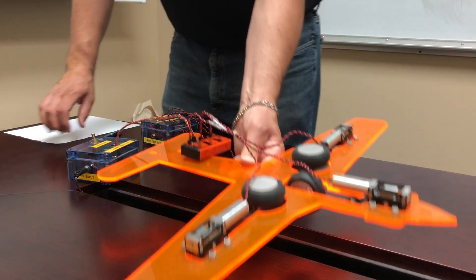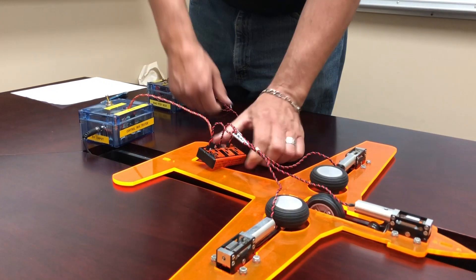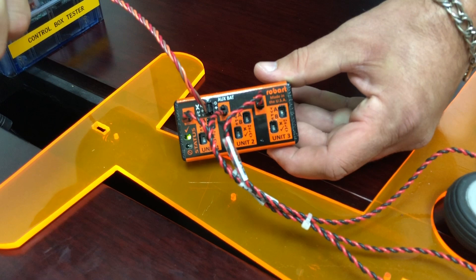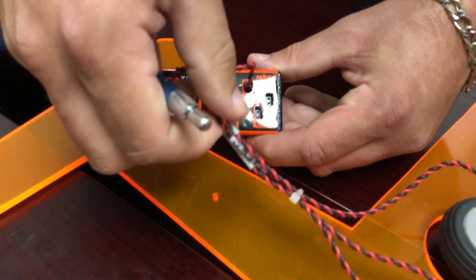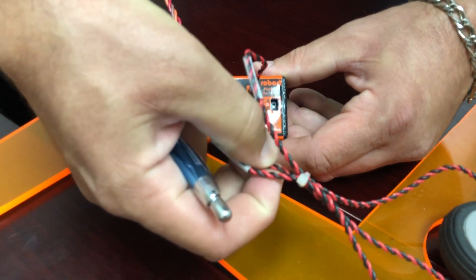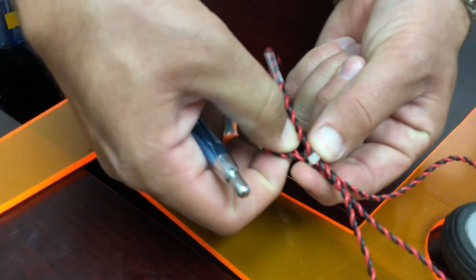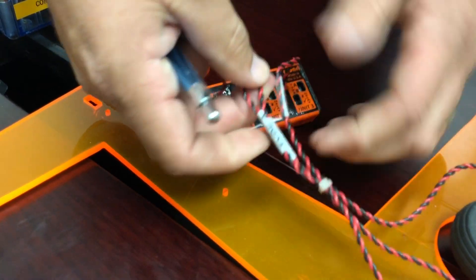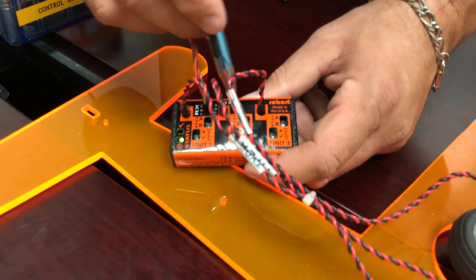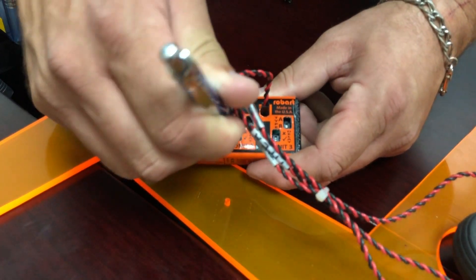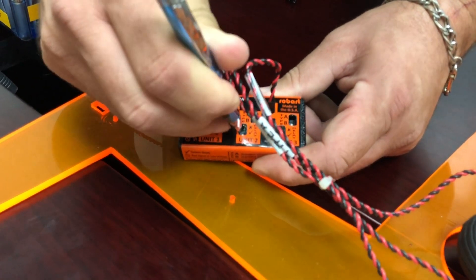The last thing I want to show you on here is on your control box you do have a delay switch. So let's say I wanted to delay the nose gear. So my nose gear, let me follow my wires around, is the middle one. So on the delay at the bottom, I'm going to move that to a check mark for a yes.